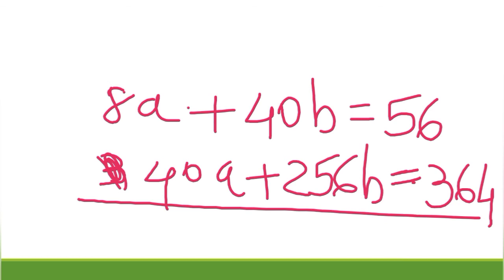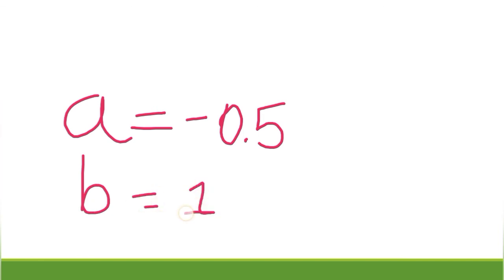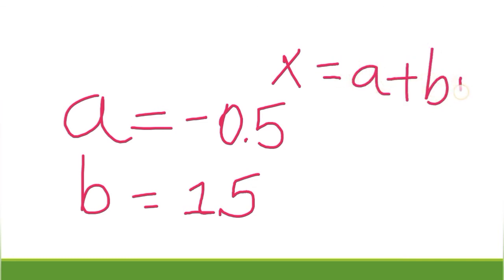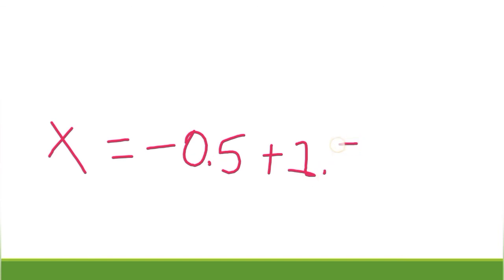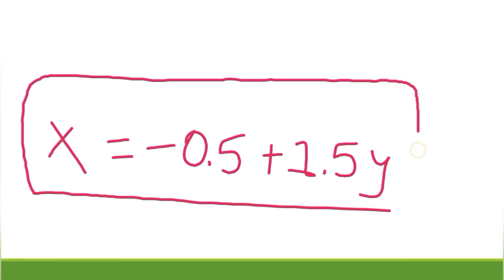On solving both these equations on the calculator we get a = -0.5 and b = 1.5. Substituting these values into x = a + by, we get x = -0.5 + 1.5y, which is the best fitting straight line to the given data.